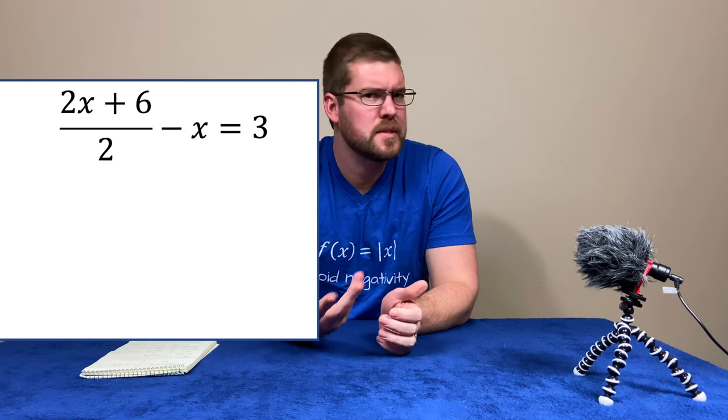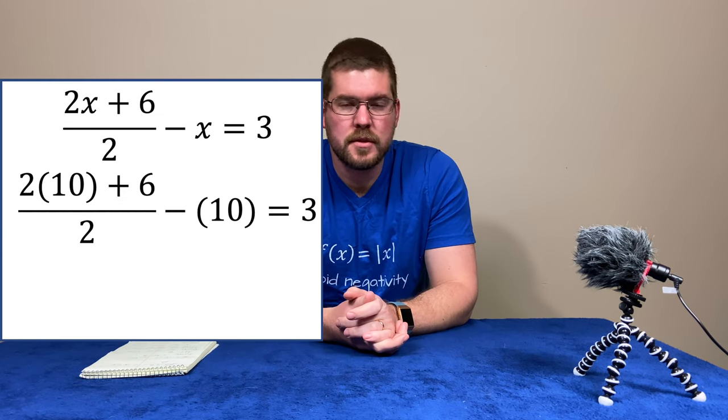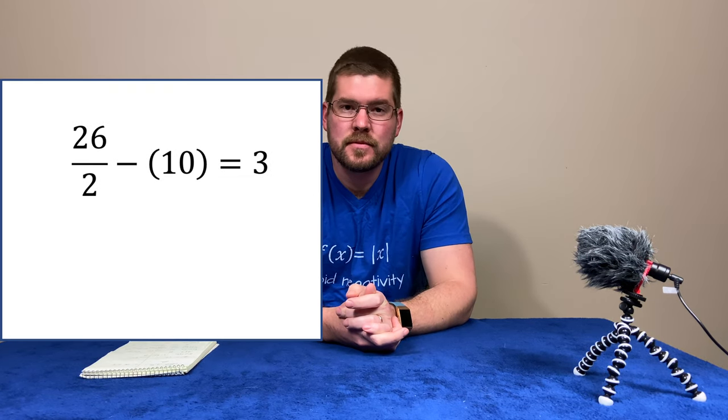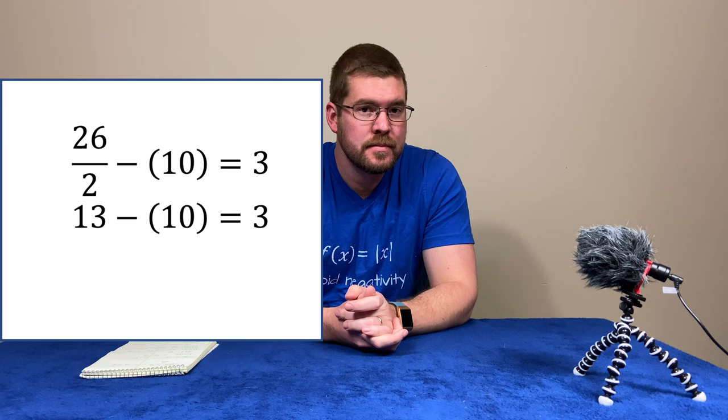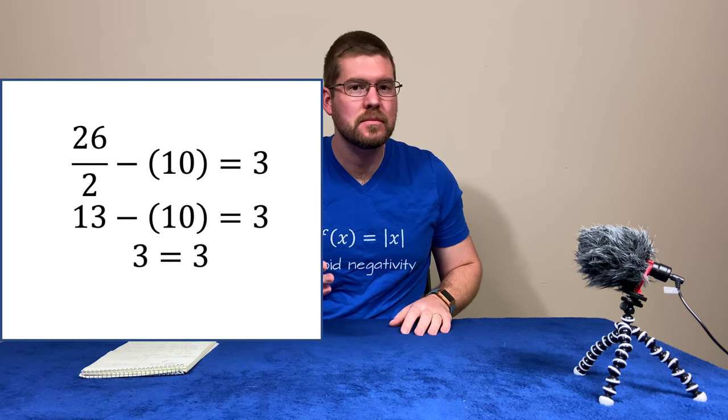let's say our number was 10. Keep it easy. 2 times 10 is 20. We add 6 to that and we get 26. Divide that by 2, we get 13. And 13 minus 10 is 3. So, your answer is 3.